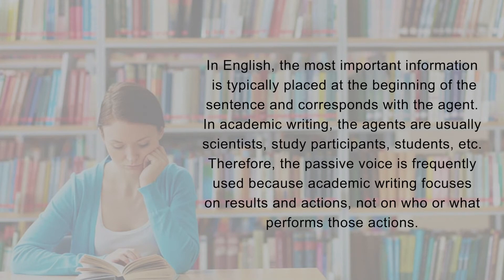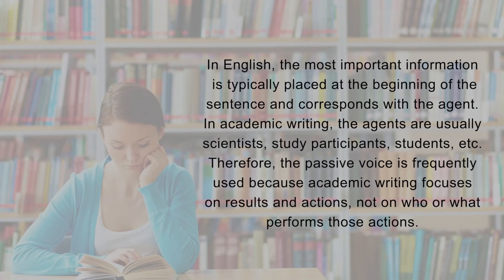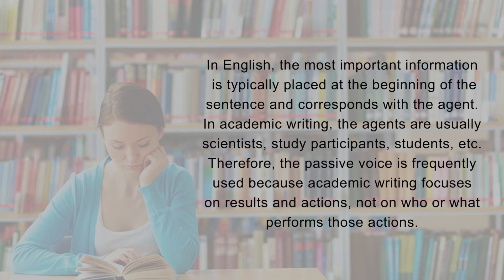In English, the most important information is typically placed at the beginning of the sentence and corresponds with the agent. In academic writing, the agents are usually scientists, study participants, scholars, students, etc. Therefore, the passive voice is frequently used because academic writing focuses on results and actions, not on who or what performs those actions.